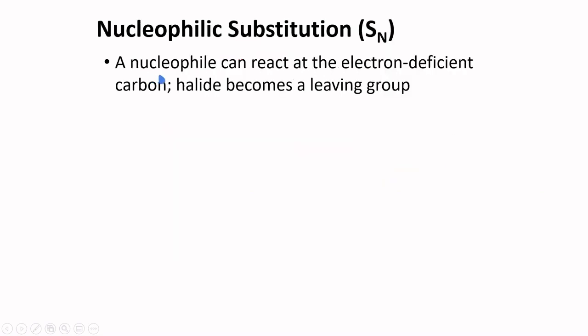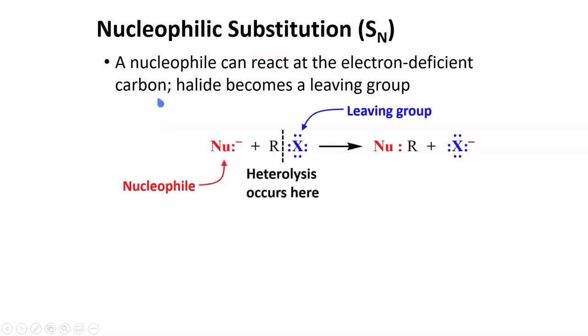A nucleophile can react at the electron-deficient carbon. Nucleophiles are species with electrons to share. The halide becomes the leaving group to produce this new compound. This reaction is called nucleophilic substitution.